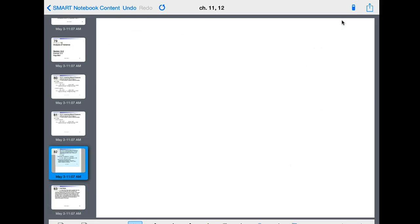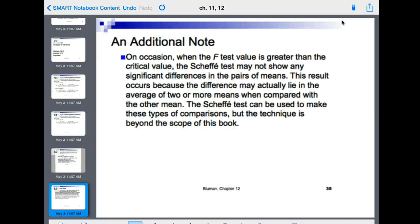Okay. Now, on occasion, when the F test value is greater than the critical value, the Scheffé test may not show any significant difference in the pairs of means. This result occurs because the difference may actually lie in the average of two or more means when compared to the other means. The Scheffé test can be used to make these types of comparisons, but the technique is beyond the scope of the book. So we might not find, even though the F test says there is a significant difference, we might not find that difference, so we don't even worry about it if it doesn't show up on the Scheffé test.